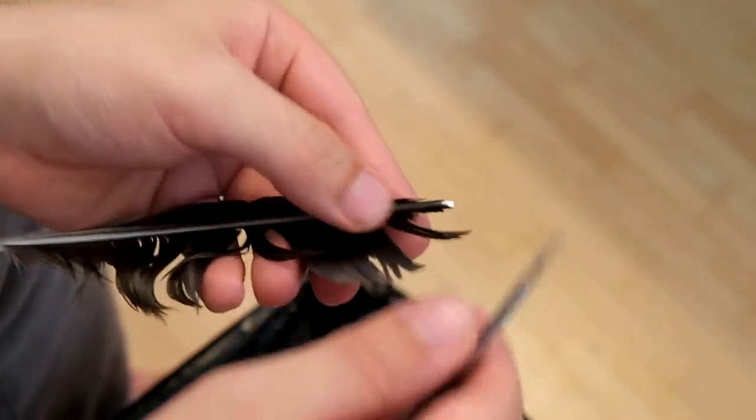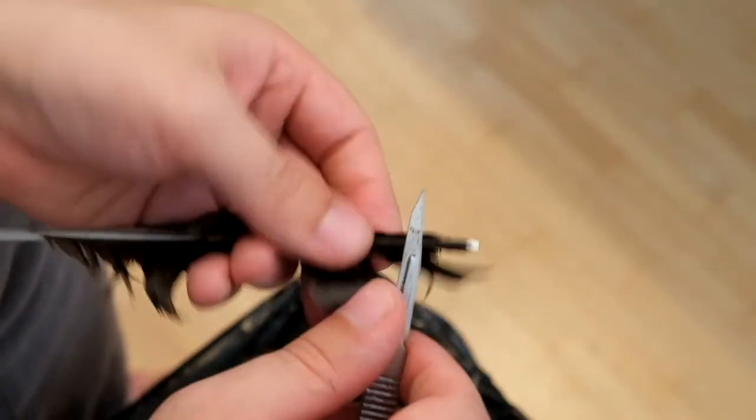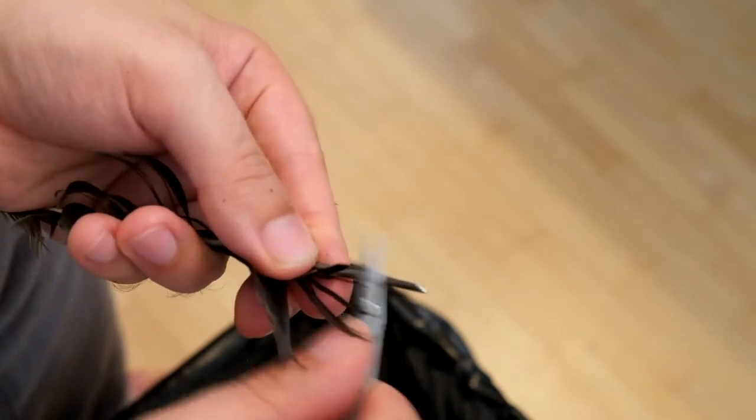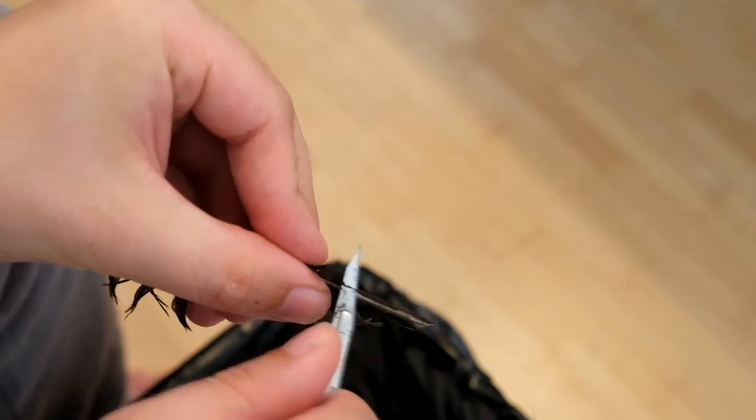What I used to do was lay the feather on its back and then cut all the barbs off in one go, but this was a bit finicky and hardly ever resulted in a clean cut, so I'd have to do this sort of trimming afterwards anyway.